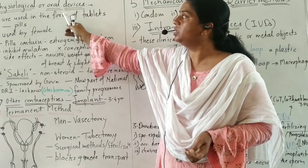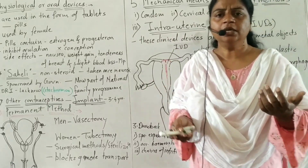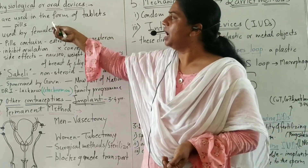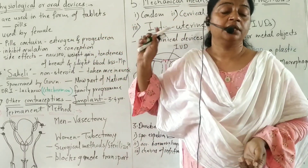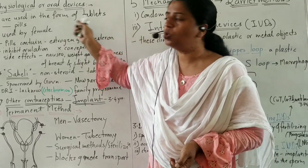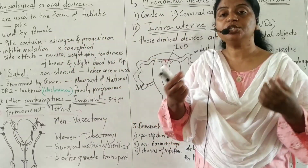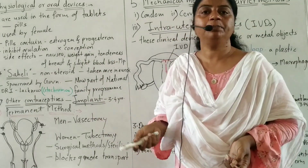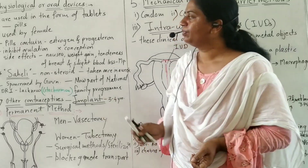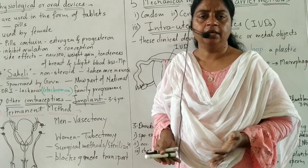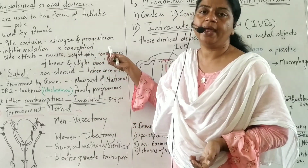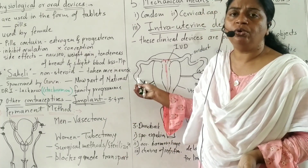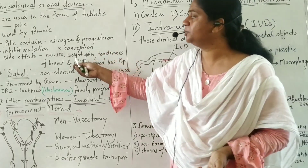The next method is physiological or oral contraceptives. Oral contraceptives are used in the form of tablets, popularly known as pills, and are used by females. These pills contain estrogen and progesterone hormones. These hormones inhibit ovulation — no ovum is released from the ovary, so there is no fertilization, no conception, and no pregnancy.